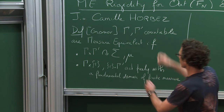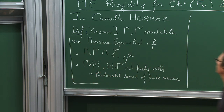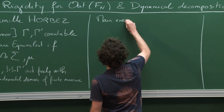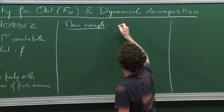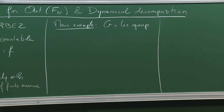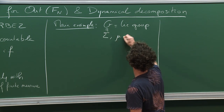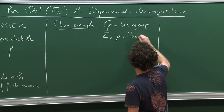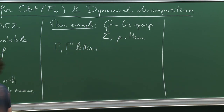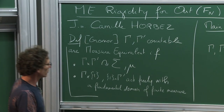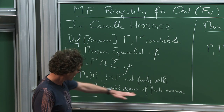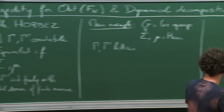This is called a coupling. If you've never seen this definition, the main example is the following: you take a Lie group equipped with its Haar measure — so that's your Σ — and you take two lattices. The direct product acts on the group by left and right multiplication, and the fact that they are lattices tells you that there's a fundamental domain of finite measure.